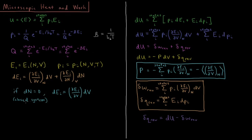For a closed system, which cannot exchange matter with the surroundings, the number of particles is constant, meaning dN equals zero. That's what we're primarily considering in this chapter — closed systems. So dEi, the change in energy levels, reduces to just the partial derivative of energy with respect to volume times the change in volume.